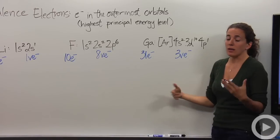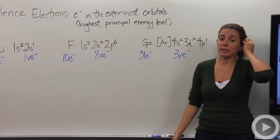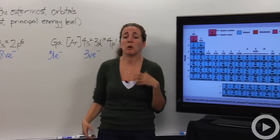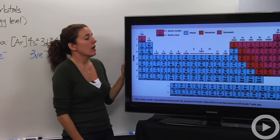So there's actually a pattern that goes along in the periodic table that tells us about the valence electrons and how we can determine them without having to go through the electron configuration.